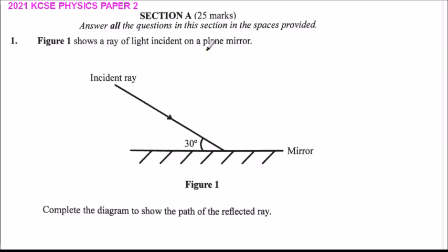Figure 1 shows a ray of light incident on a plane mirror. We have a plane mirror here. This is the incident ray that makes an angle of 30 degrees with the plane mirror. Complete the diagram.